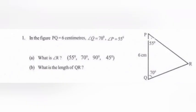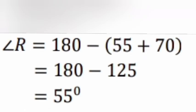1. In the figure, PQ equals 6 cm. Angle Q equals 70 degrees. Angle P equals 55 degrees. A. What is angle R? Answer: Angle R equals 180 minus (55 plus 70) equals 180 minus 125 equals 55 degrees.